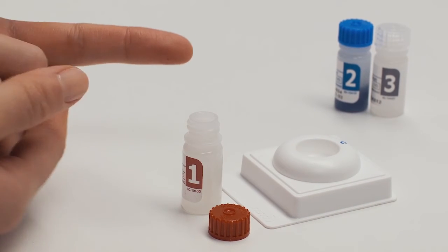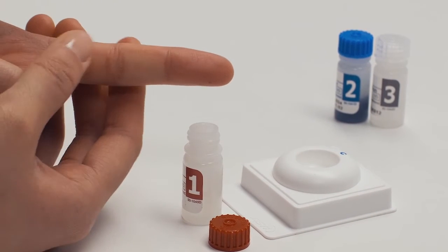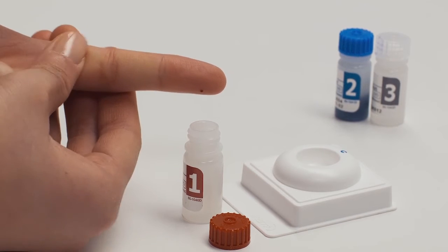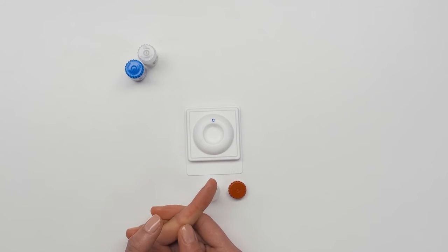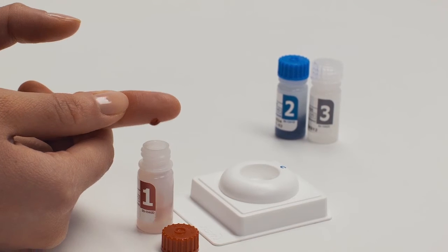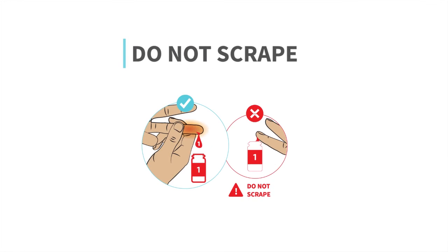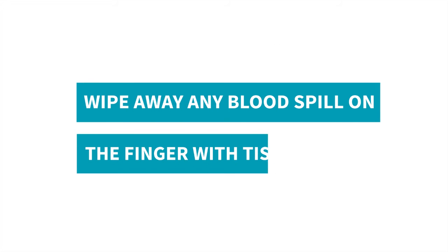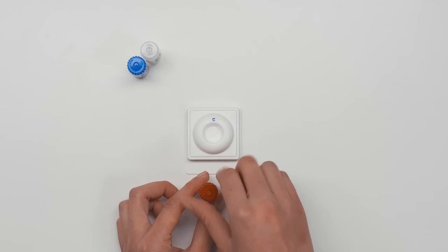Rub the finger to get a larger, round drop of blood. Let one drop fall into bottle 1. Do not scrape your finger on the bottle. Twist on cap of bottle 1. Apply a bandage.